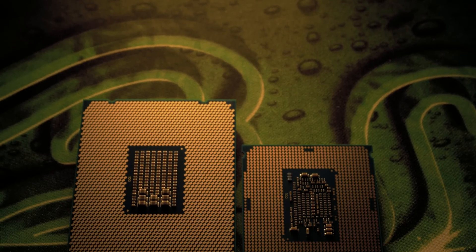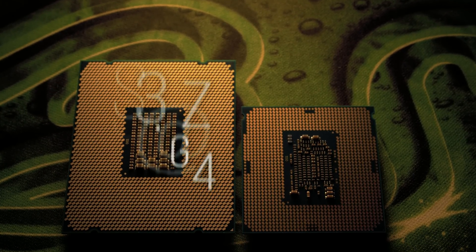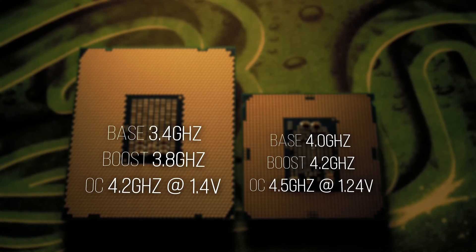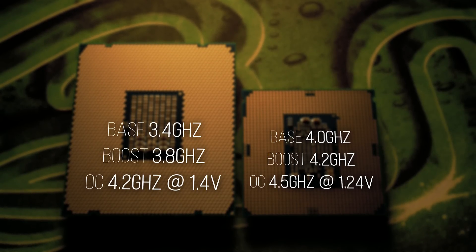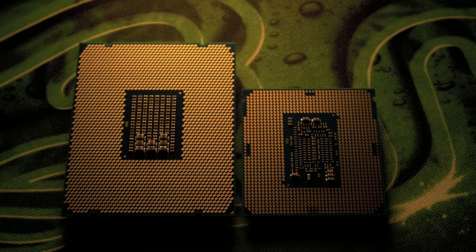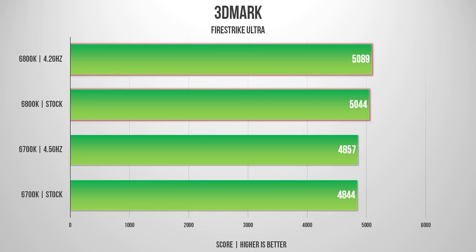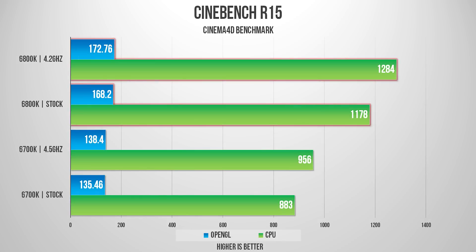Aside from testing stock-to-stock speeds, my 6700K easily achieves 4.5GHz at 1.24V, while I didn't get so lucky with the big guy that could only reach 4.2GHz at 1.4V. Starting with some generic system performance, we have 3DMark Firestrike Ultra with the 6-core machine performing 4% faster. In Cinebench R15, the 6800K delivers a 34% better score both at stock and overclock, and a 24% boost in the OpenGL test, most likely due to higher cache.